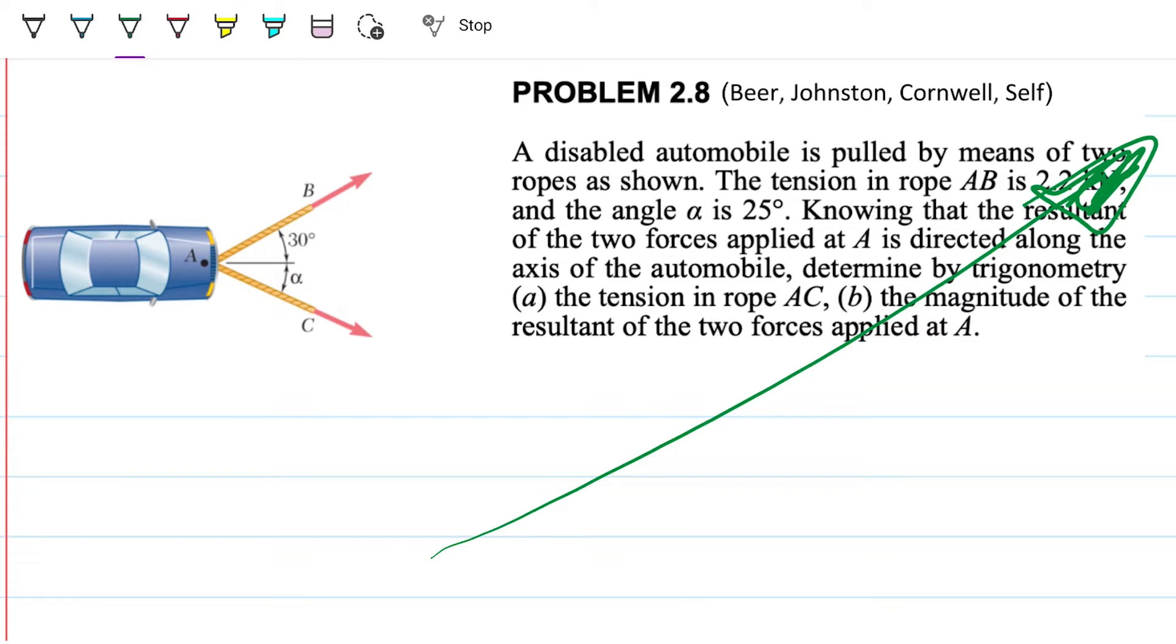A lot of videos explaining where this comes from, origins, proofings of things, so nothing new on this problem. Problem statement reads, a disabled automobile is pulled by means of two ropes as shown. The tension in rope AB is 2.2 kilonewtons and the angle alpha is 25 degrees. Knowing that the resultant of the two forces applied at A is directed along the axis of the automobile, determine by trigonometry the tension in rope AC and the magnitude of the resultant of the two forces applied at A.